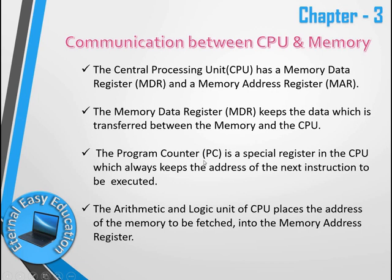The Program Counter register stores the address of the next instruction to be executed. The CPU executes instructions line by line. After executing one instruction, the next instruction's address is held in the Program Counter so the CPU knows what to execute next.